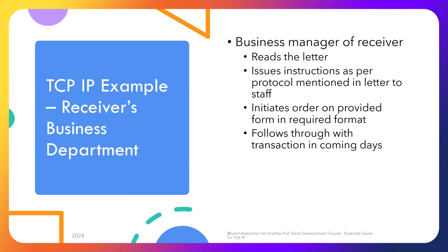The business manager reads the letter and is now aware of the sequence of steps to initiate and follow through with the transaction. He drafts appropriate instructions for his staff, assigning them responsibilities as per the procedure sent to him, and then sends a formal request by filling out the item number and quantities form — that is step one in your process. You respond and both parties follow through with the negotiated process to complete the transaction all the way.